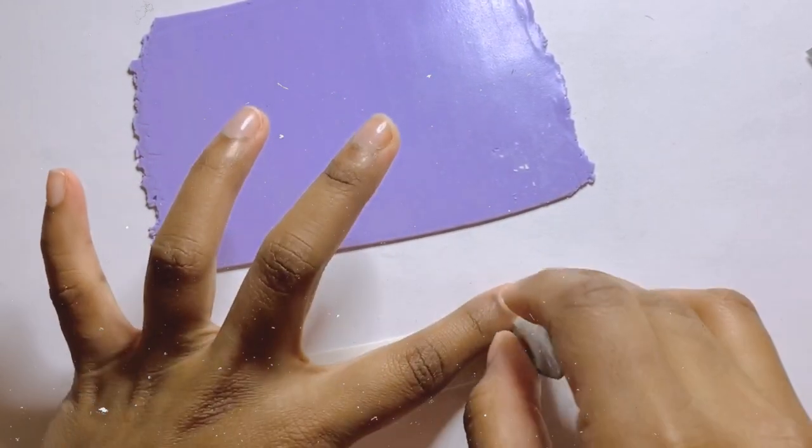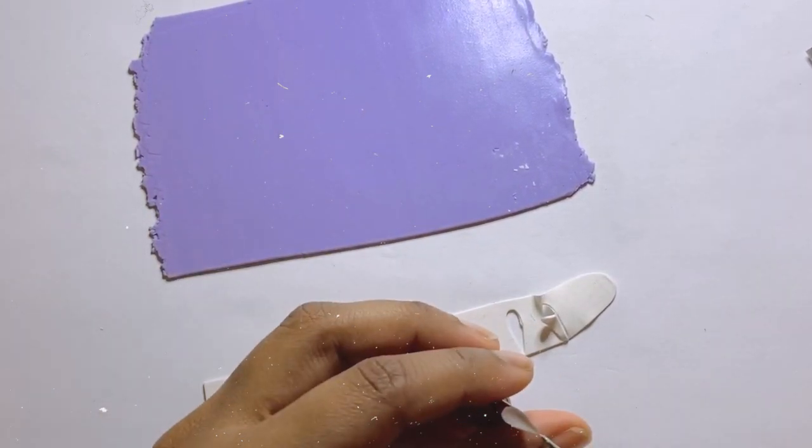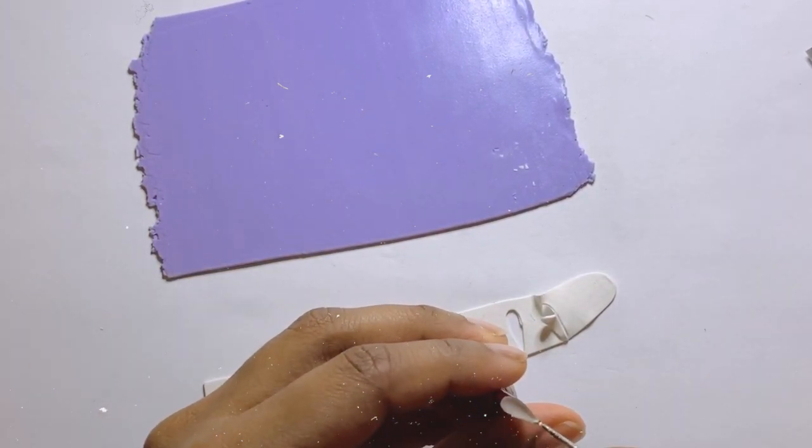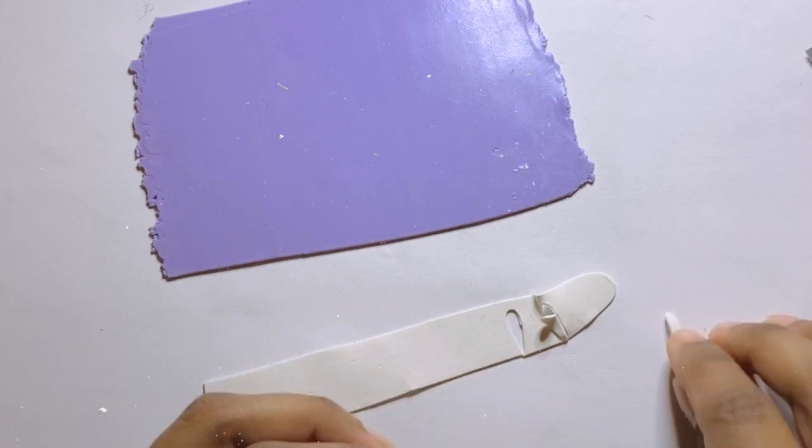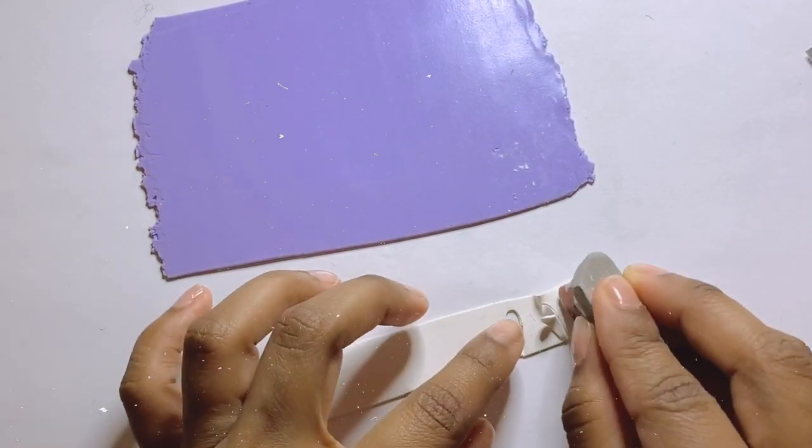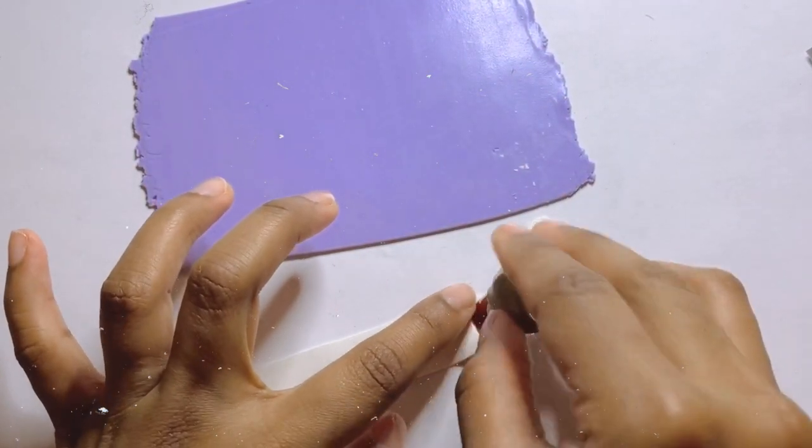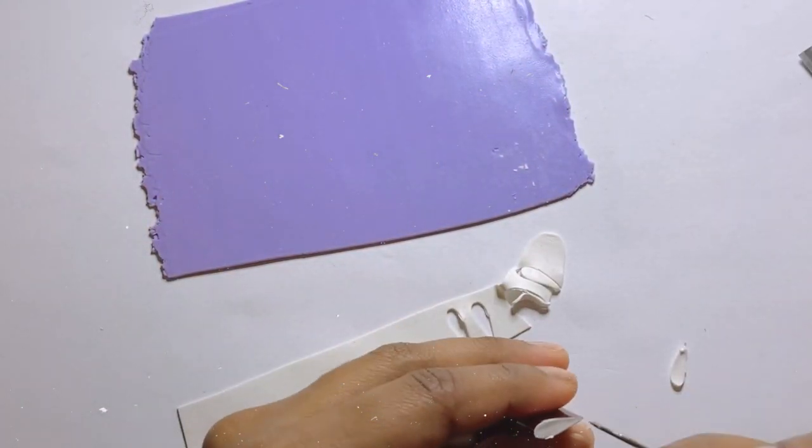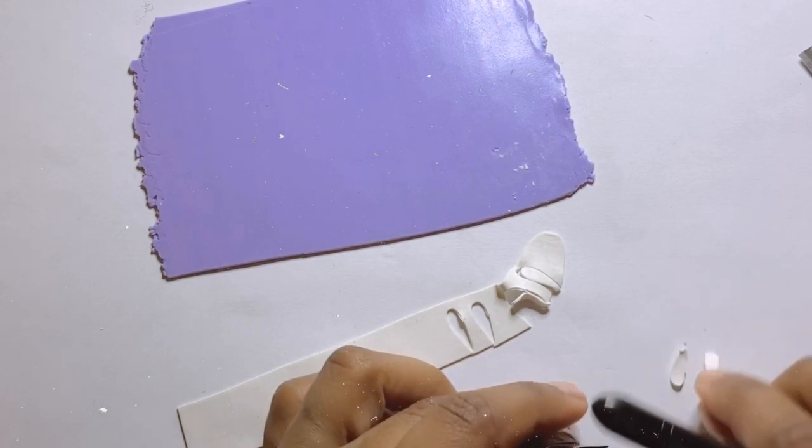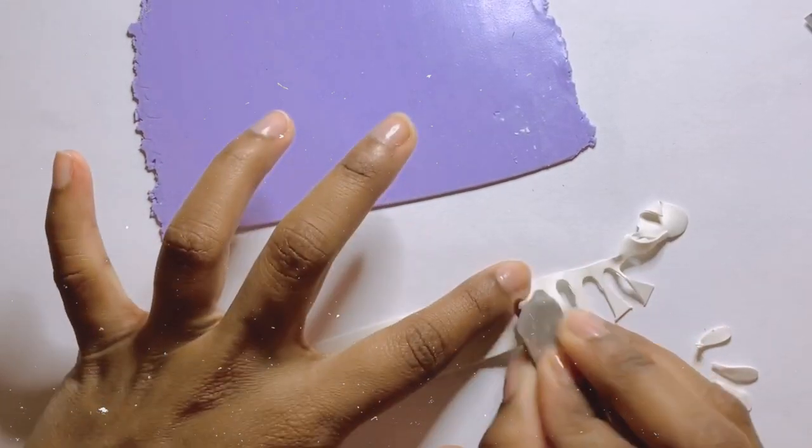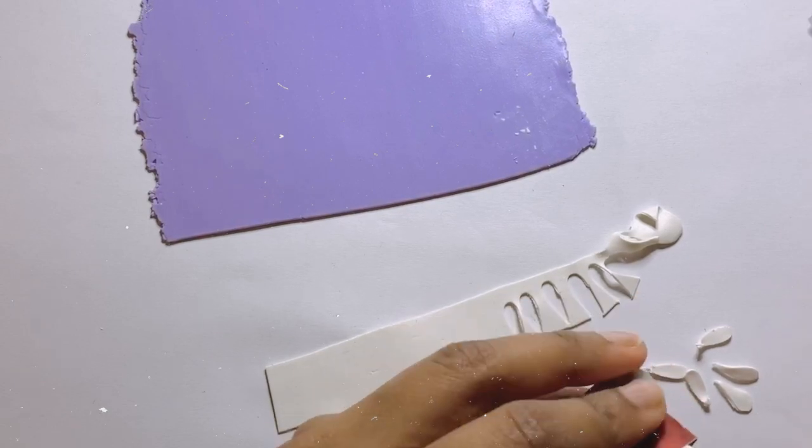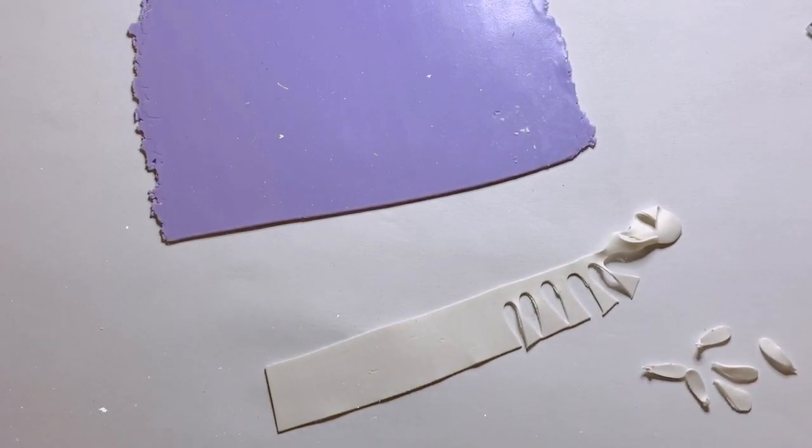It was very difficult to cut the petals out at first because here in Los Angeles, it's very hot and my clay became very soft. But I left my clay in the freezer for about 20 minutes and it was pretty easy to cut after that. If your petals get stuck inside the cutter, use a needle tool and carefully lift it up.